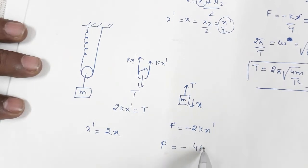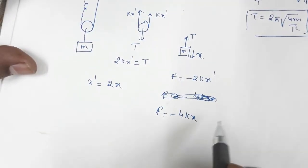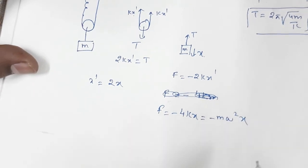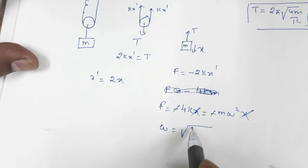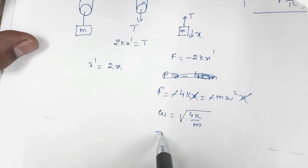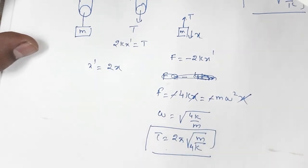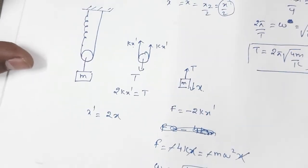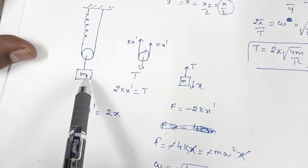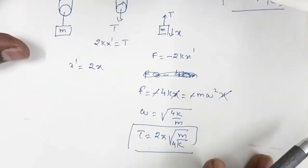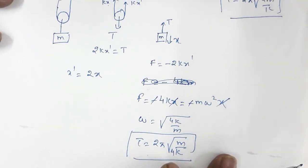Since x' = 2x, substituting gives F = −2k(2x) = −4kx. Setting this equal to −mω²x, we get ω² = 4k/m, so the time period is T = 2π√(m/4k). This is the expression for the time period for this system. The general method is: find the force acting on the spring, determine the force on the block, evaluate the restoring force, find ω, and from that get the expression for T.